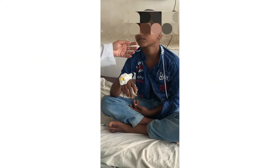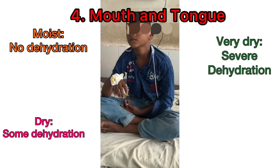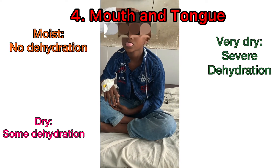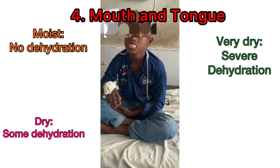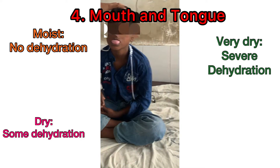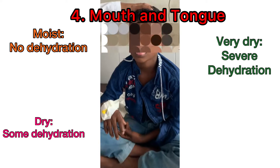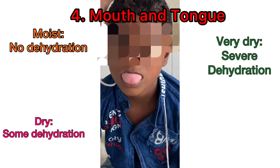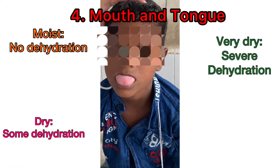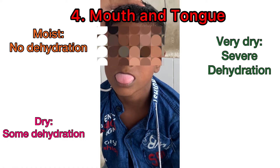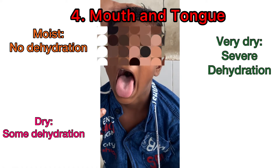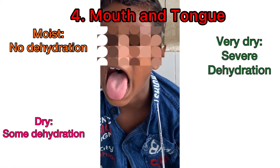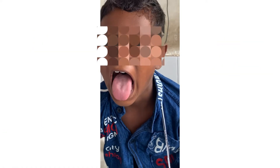After that, you should look at the mouth and oral cavity. Look at whether the mouth and oral cavity is moist, or it is dry, or very dry — like in this case, it is dry. Look at not only the tongue, but also the oral mucosa as a whole.